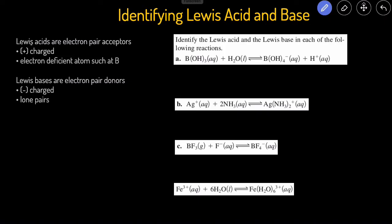Easy way to determine which one's a Lewis acid is that Lewis acids are typically either positively charged, or they will contain an electron-deficient atom, such as boron. Boron tends to form just six valence electrons instead of the full octet, eight valence electrons.